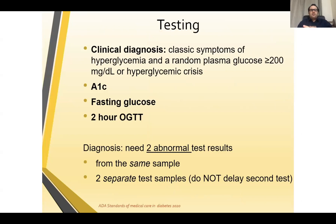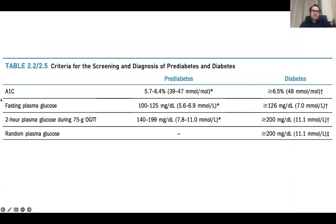How do we screen and diagnose? The classic symptoms of hyperglycemia plus a random blood glucose of more than 200 mg/dL is one way of diagnosis. If the patient does not have classic symptoms, then HbA1c, fasting glucose, or two-hour OGTT is used, and any two abnormal test results from the same sample or two separate tests are required. The HbA1c in pre-diabetes is 5.7–6.4%, and in diabetes it is 6.5% or more. Fasting glucose is 100–125 in pre-diabetes and more than 126 in diabetes. Two-hour plasma glucose is 140–199 in pre-diabetes and more than 200 in diabetes.